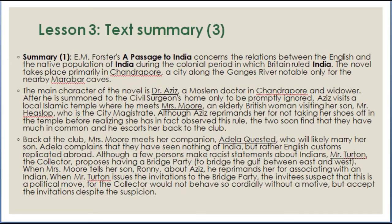Text Summary: E.M. Forster's A Passage to India concerns the relations between the English and the native population of India during the colonial period in which Britain ruled India. The novel takes place primarily in Chandrapur, a city along the Ganges River notable only for the nearby Marabar caves. The main character of the novel is Dr. Aziz, a Muslim doctor in Chandrapur and widower. After he is summoned to the civil surgeon's home only to be promptly ignored, Aziz visits a local Islamic temple where he meets Mrs. Moore, an elderly British woman visiting her son. He initially criticizes her for not taking her shoes off in the temple.